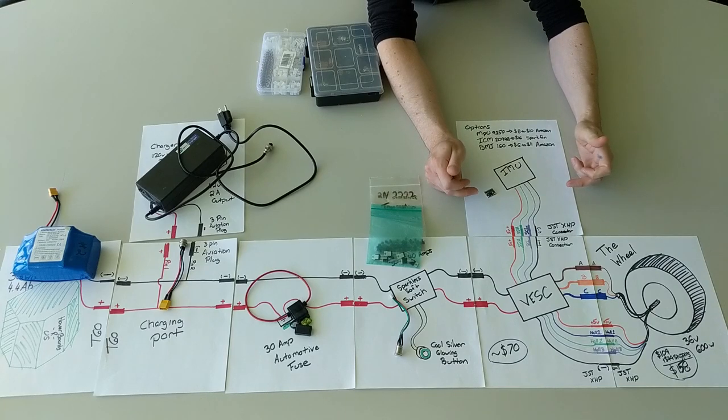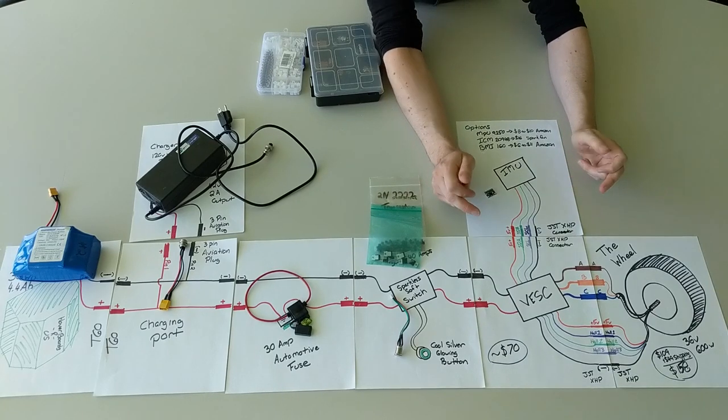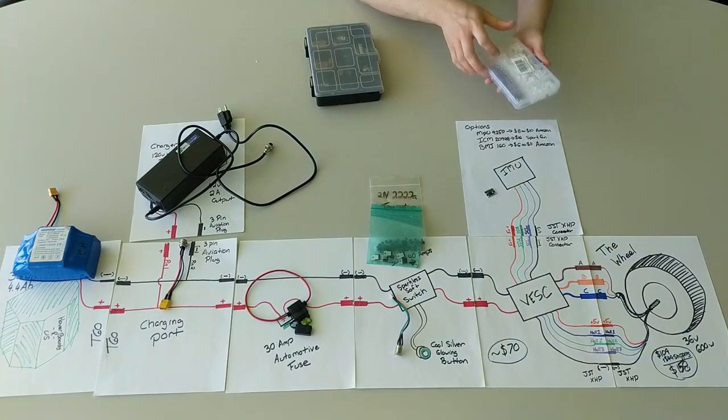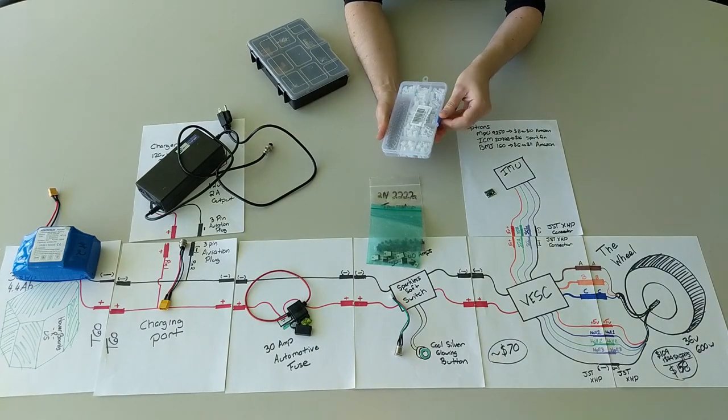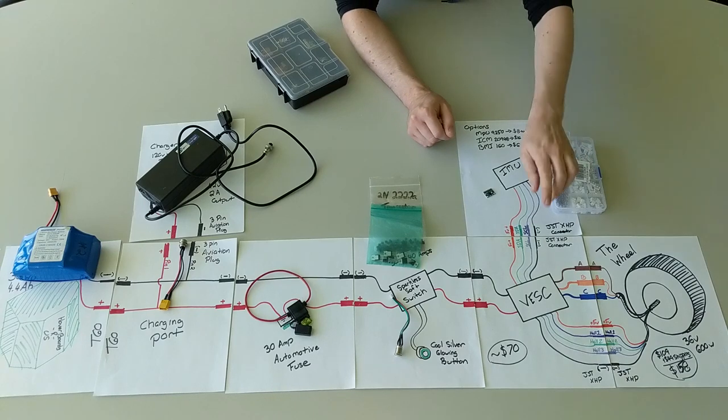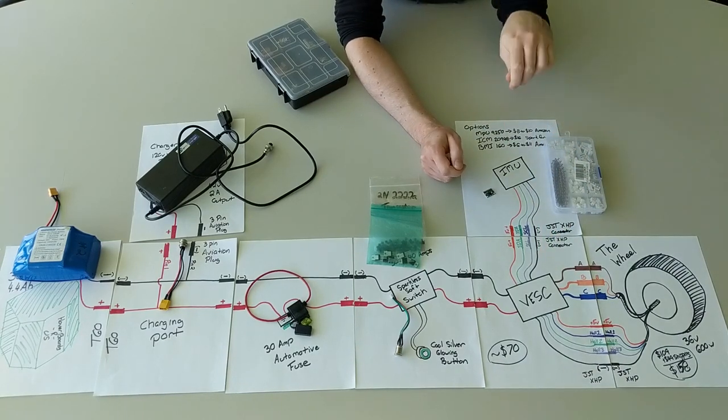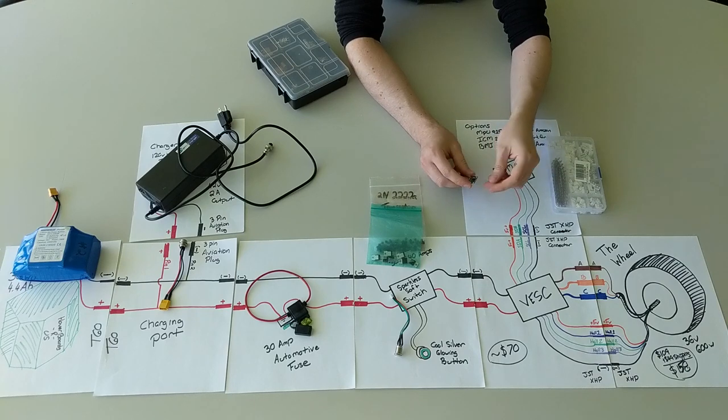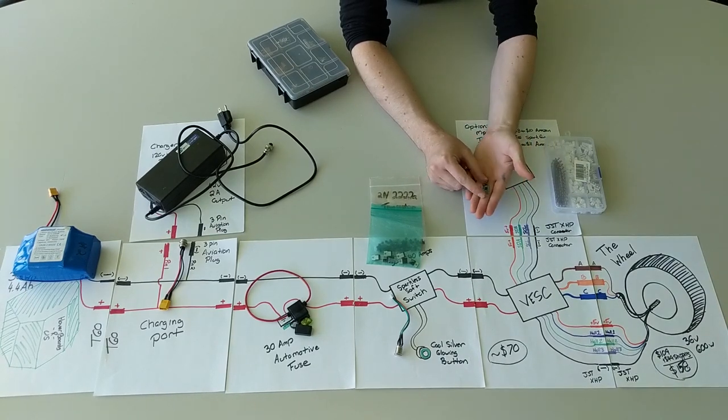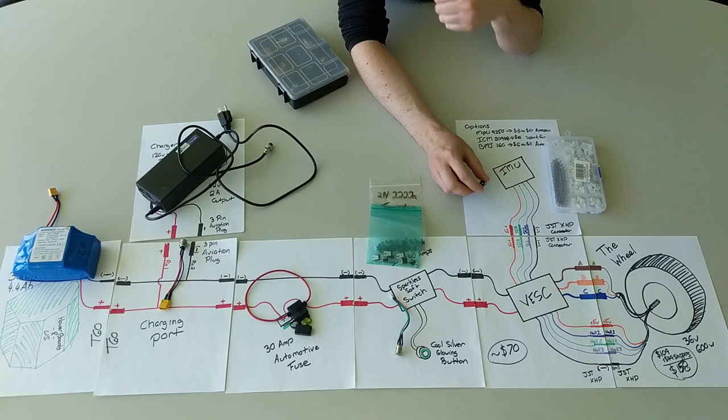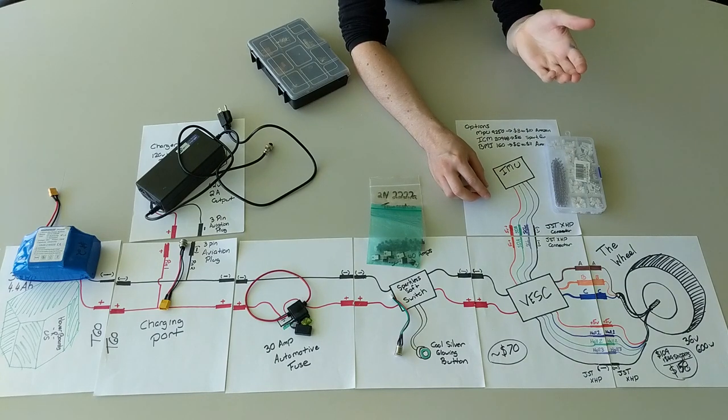The IMU is going to have four lines that need to connect from it to the VESC. We're going to use a JST connector. You can get these packs on Amazon, it's basically a solderless connector joint. The VESC will already have a male header populated on it, so we will need to create the female version on the cable. This accelerometer will have to be mounted securely within the board, because if it's flopping around it's not going to get a good idea of balance.